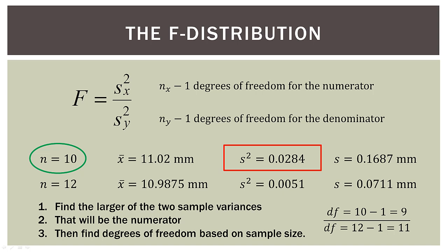Therefore, in the denominator, that's gonna be our second sample. So that sample size was 12. 12 minus one equals 11. So our numerator degrees of freedom is nine, and our denominator degrees of freedom is 11. And that all started because we placed the larger variance in the numerator.